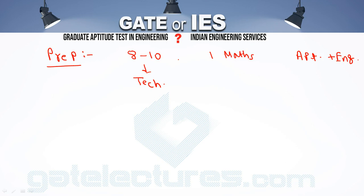If I compare the syllabus, GATE syllabus is less compared to IES. But if I compare the difficulty level, GATE questions are very logical and very calculation-intensive. Some questions require 1 to 2 pages of work and 2 to 3 minutes to solve — which is a tremendous task given only 3 hours total. So the GATE questions are tough.